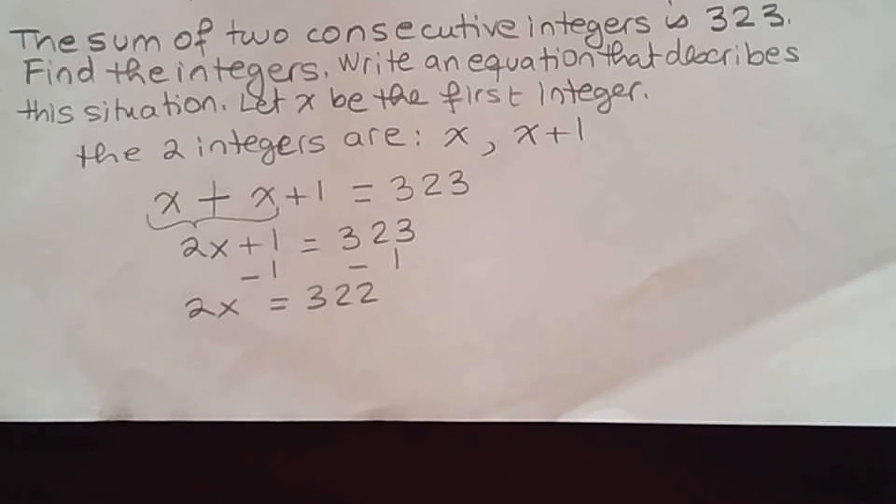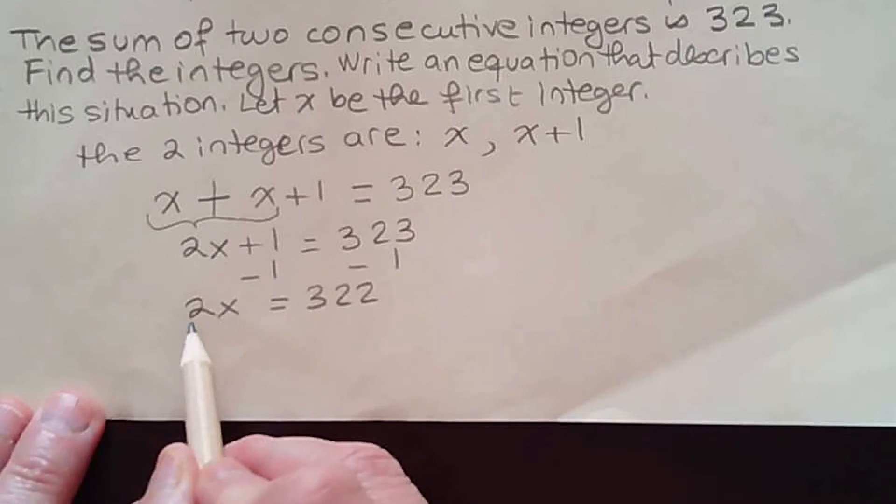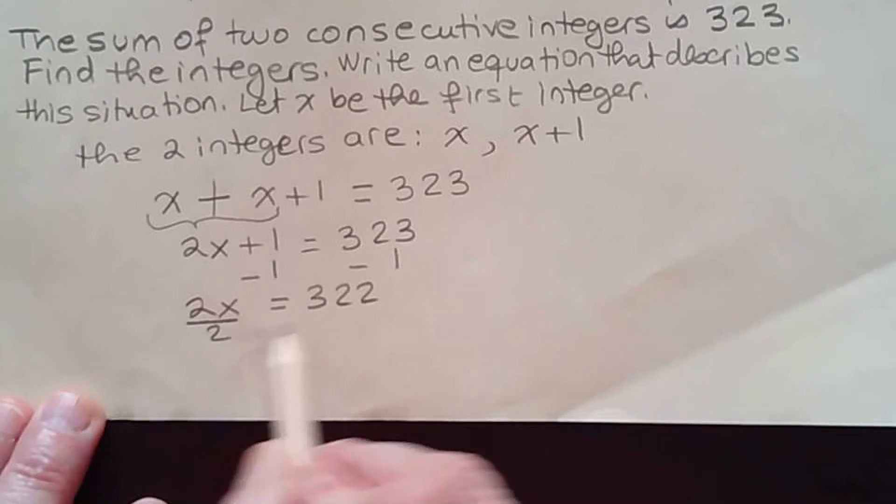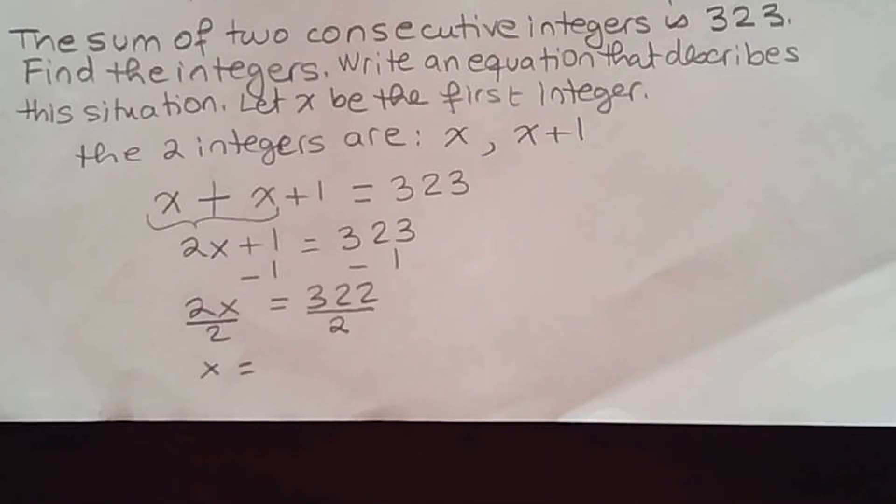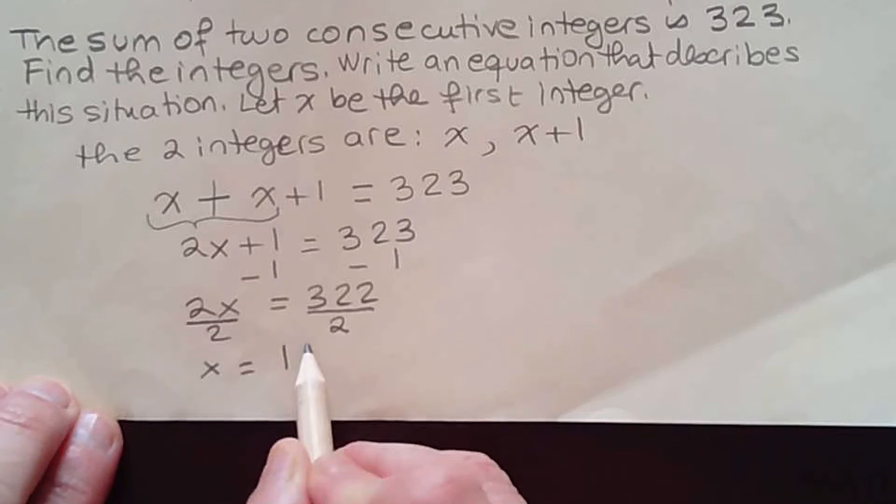Now we have to divide by 2. Remember, we are isolating the variable, so we divide by 2 on both sides of the equation. We get x is equal to, if you use your calculator, 322 divided by 2 should give you 161.